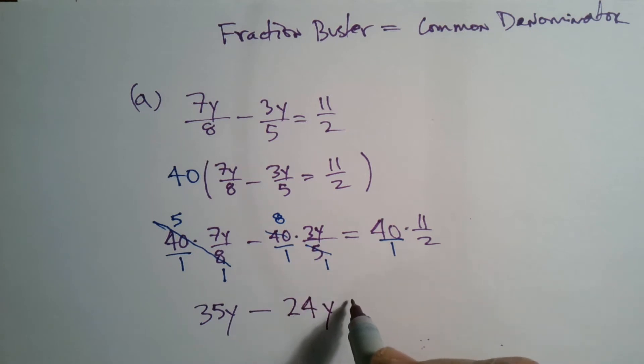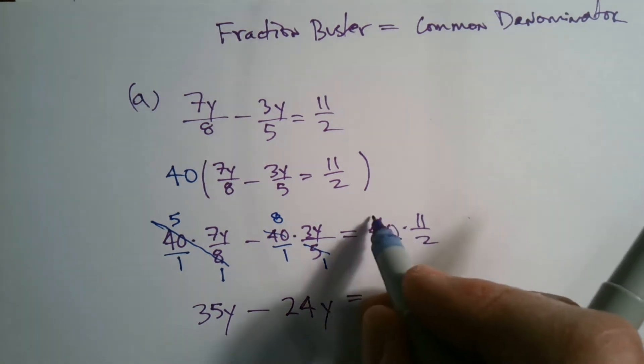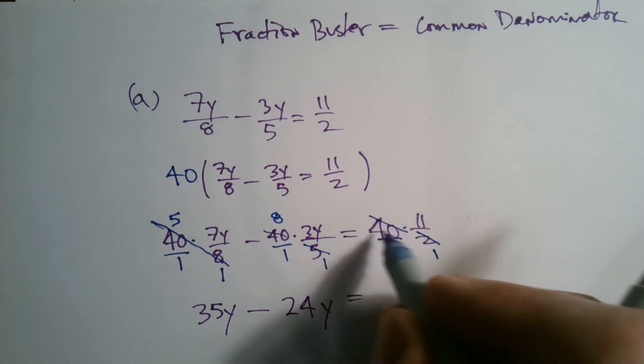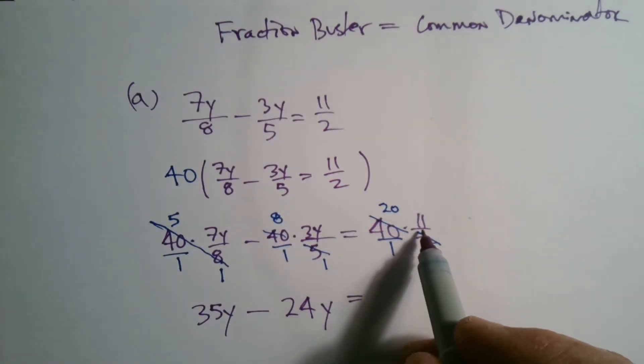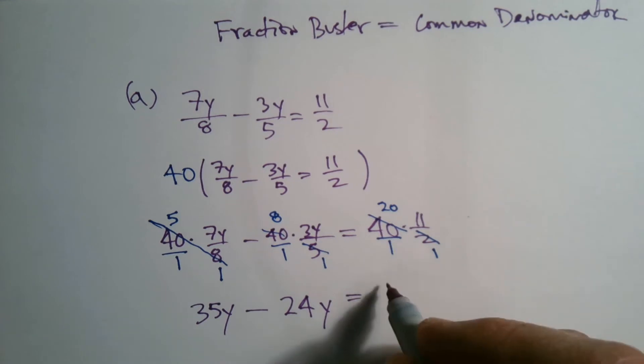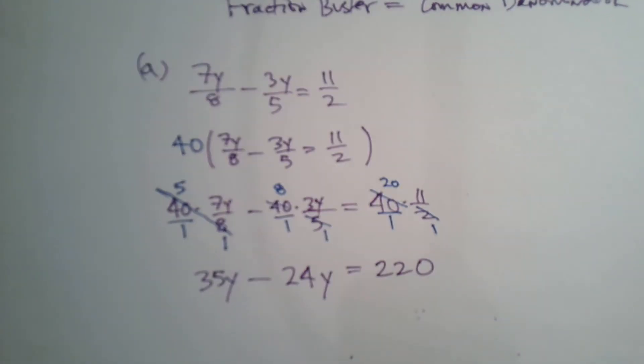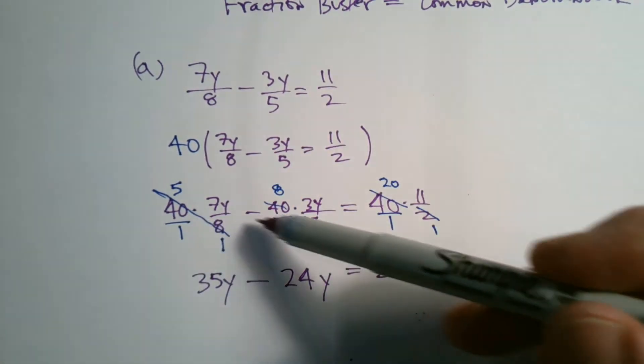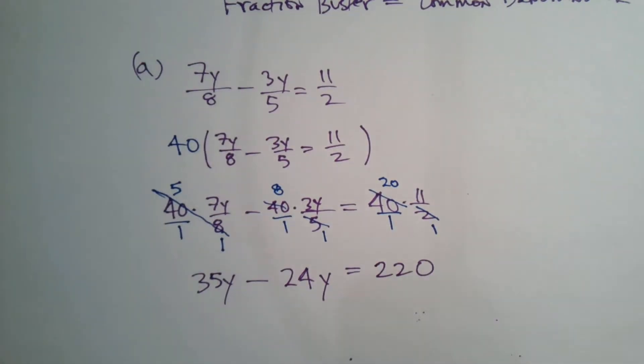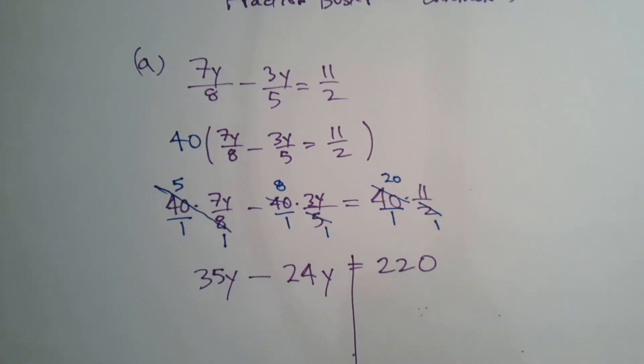And then equals - here I have the same thing another time, 40 and 2 can simplify. 2 goes into 2 once, 2 goes into 40 20 times, and then I just have to multiply 20 times 11 and I get 220. So notice I started with terms that had fractions, utilize my fraction buster, now I no longer have fractions and now it's just solving this equation as we have before.